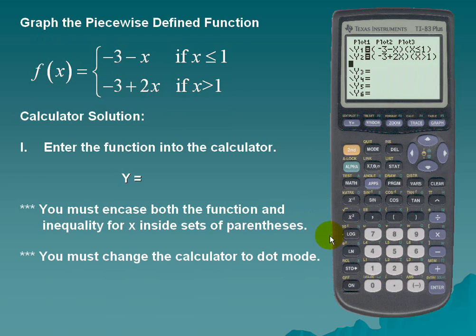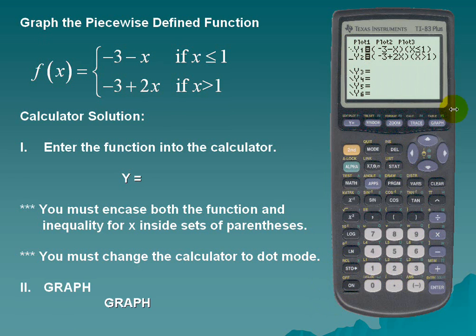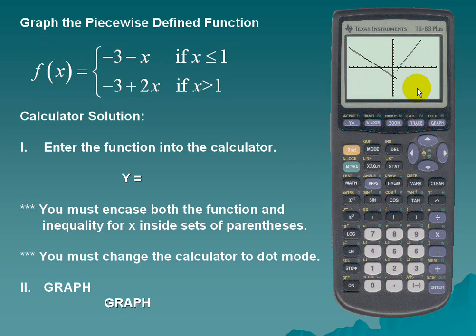We must change the calculator mode to dot mode. To do so, go back to the first piece of our function, scroll to the immediate left, and click ENTER six times. Notice it changes from connected mode to dot mode. Do the same for the second piece of the function. Now we have dot mode for both. Next, we'll graph, and here we have the piecewise defined function.